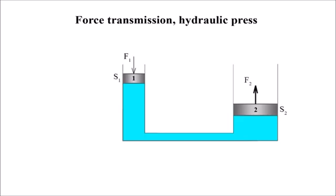When force F1 acts on area S1, a pressure is given by pressure acts at every point in the system, which includes surface S2. The attainable force F2 is given by...